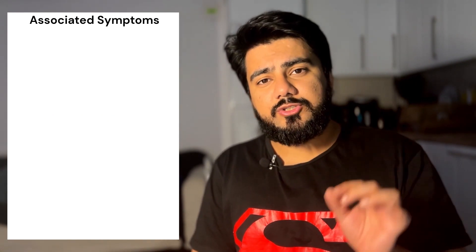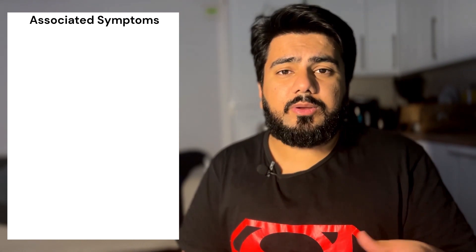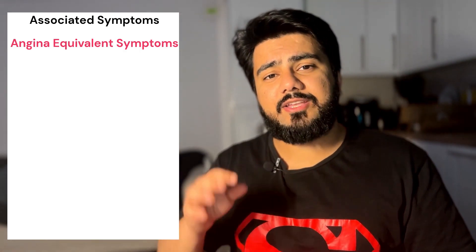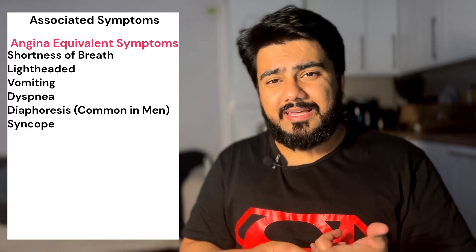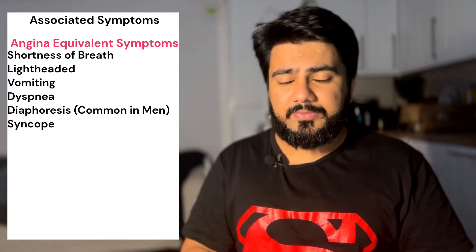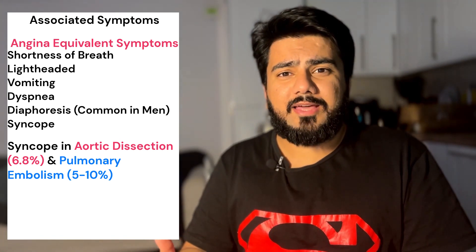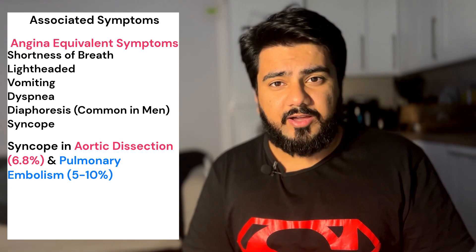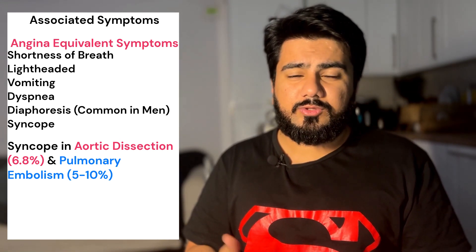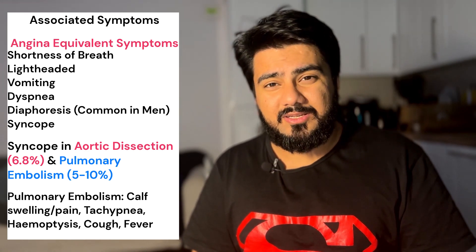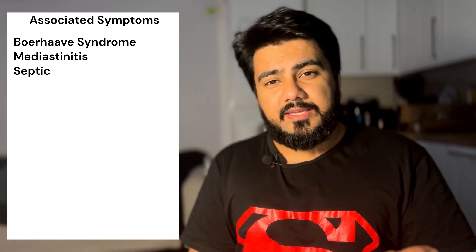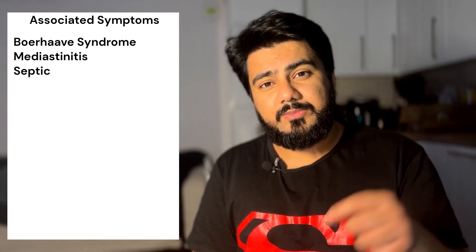The next thing is to ask about associated symptoms. When a patient has acute coronary syndrome, they can have angina equivalent symptoms: shortness of breath, lightheadedness, vomiting, nausea, and even syncope. Syncope is also present in aortic dissection and in pulmonary embolism around 5 to 10 percent of the time. People with pulmonary embolism will also have some degree of calf swelling, calf tenderness, shortness of breath, tachypnea, dyspnea, hemoptysis, and maybe even a fever. With Boerhaave syndrome, rupture of the esophagus causes spillage of esophageal contents into the mediastinum, and patients can develop mediastinitis and be septic when they present to the emergency department.